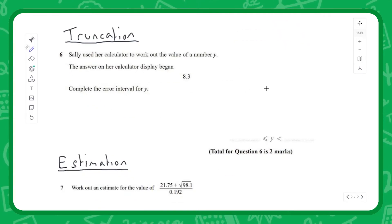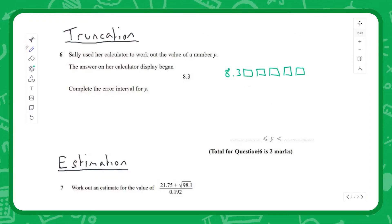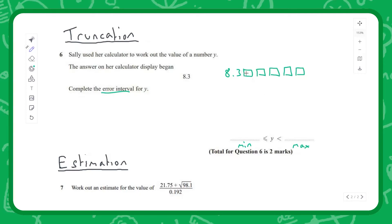Truncation - halfway there. Sally uses a calculator to work out the value of a number. The display begins 8.3, so it's going to be 8.3 something something something - we don't know what these numbers are after that 3 digit. If we look at the error interval, we're looking at the maximum and the minimum there could be, so we're trying to find the min and the max that this number could actually be. What's the minimum that could go here? What's the smallest digit that could go in this box? Well, the smallest digit is a 0, and in fact all these boxes could contain zeros.